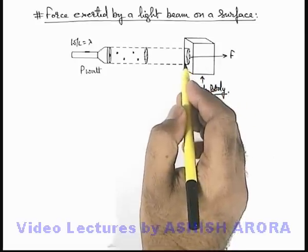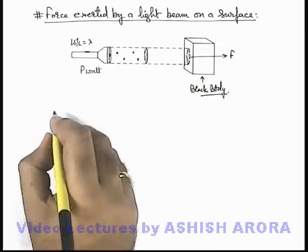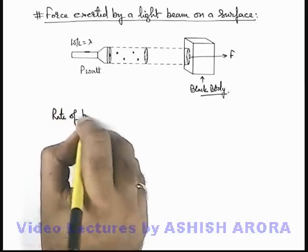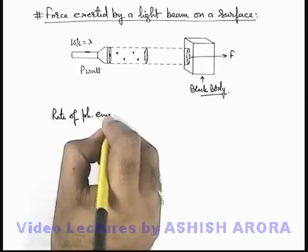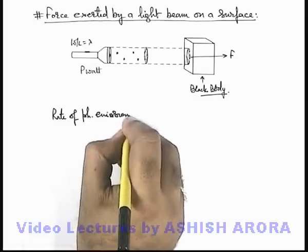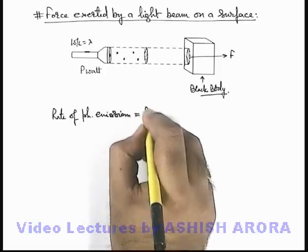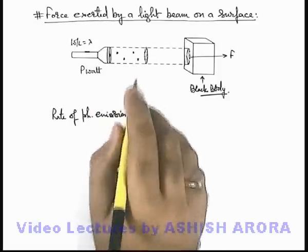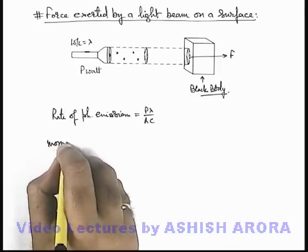Now in this situation, if we calculate the rate of photon emission, the rate of photon emission from the source can be given as Pλ/hc. This much amount of photons are emitted per unit time.